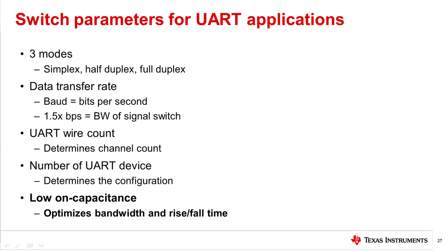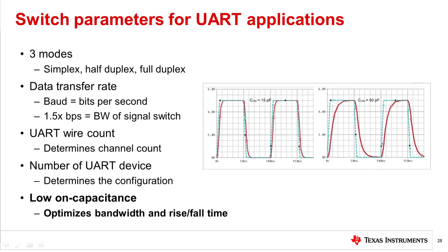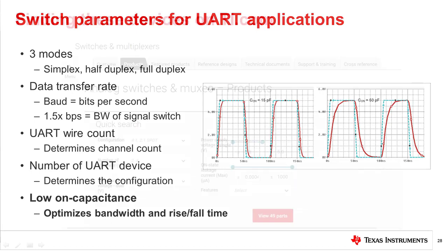Since UART communication is digital, it is important to note the on-capacitance of the signal switch. Because UART applications are peer-to-peer, introducing a signal switch adds capacitance to the line that typically wouldn't be seen. It is important to minimize this capacitance, as it will directly impact the bandwidth of the signal and the RC time constant. This, in turn, will affect the rising and falling edges of the digital communication signal.